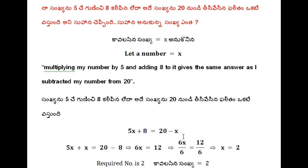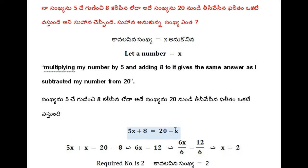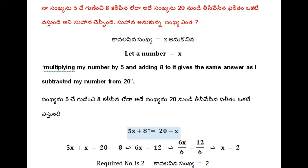Separating variables and constants. Transposition of minus x becomes plus x. So 5x plus x is equal to 20 minus 8. 6x is equal to 12.